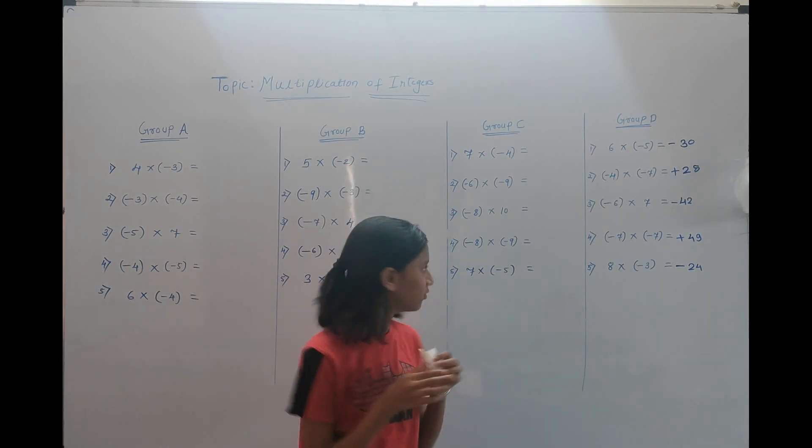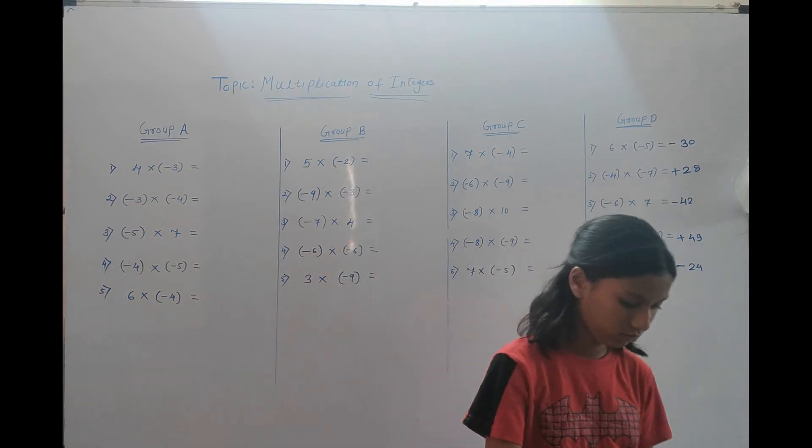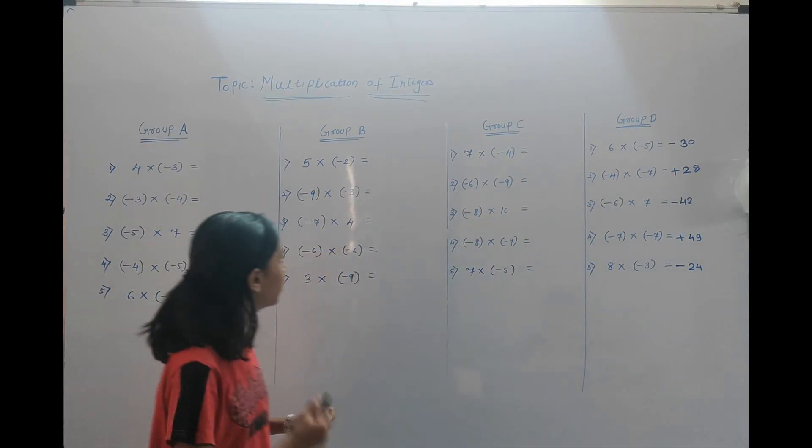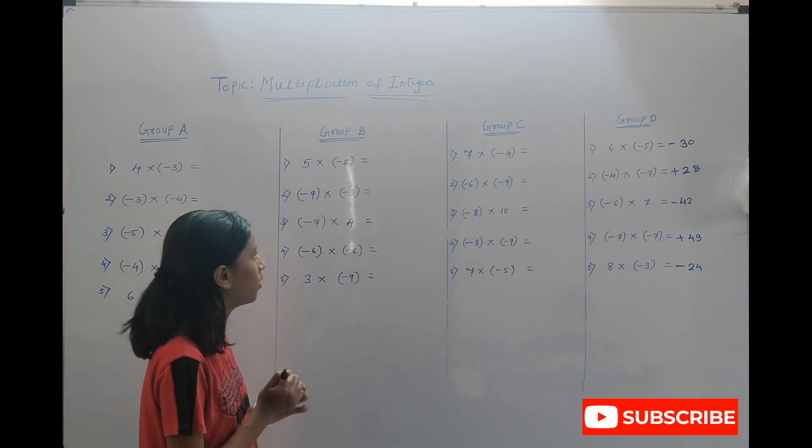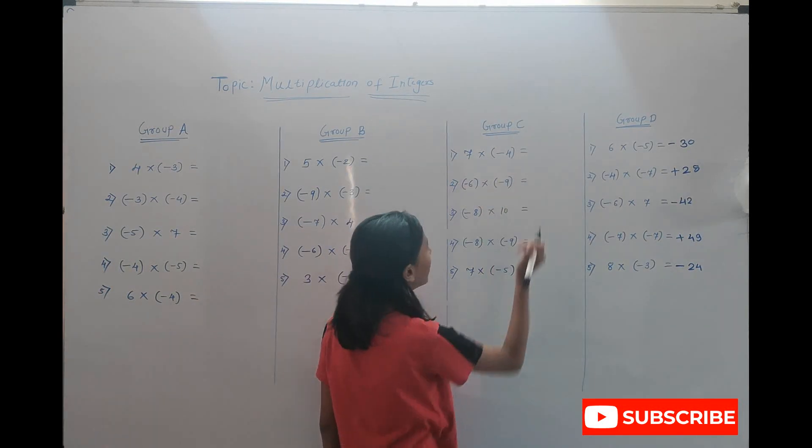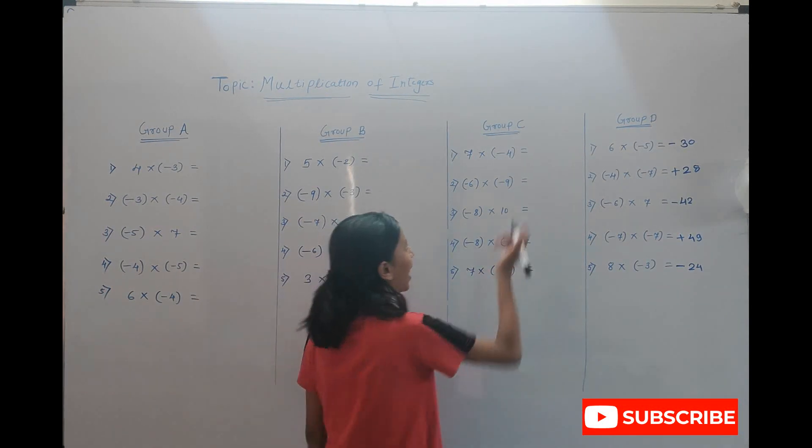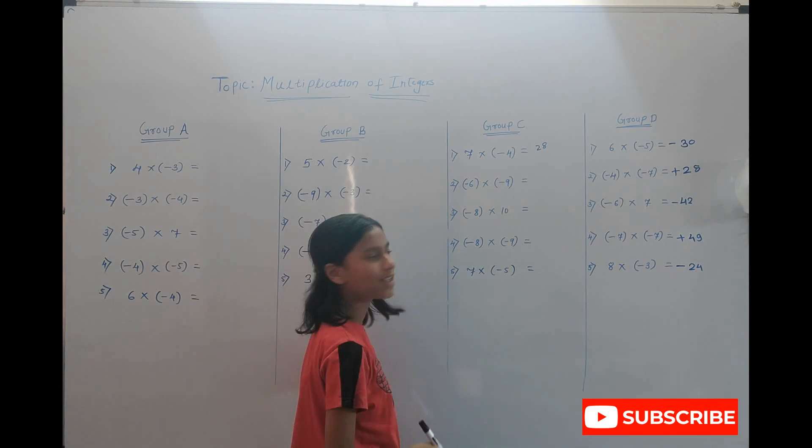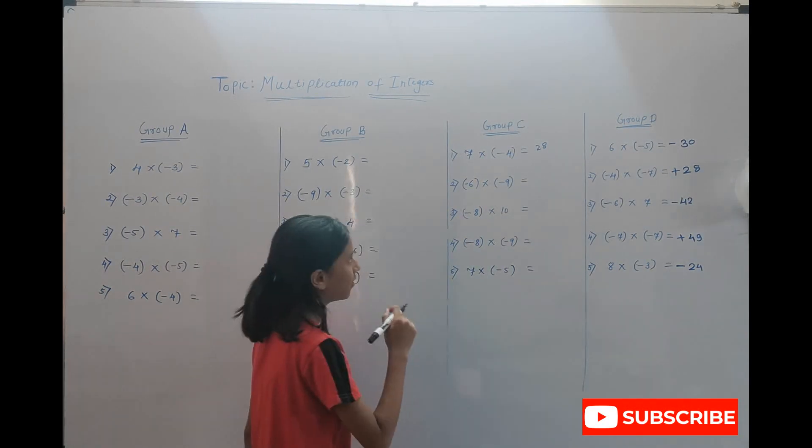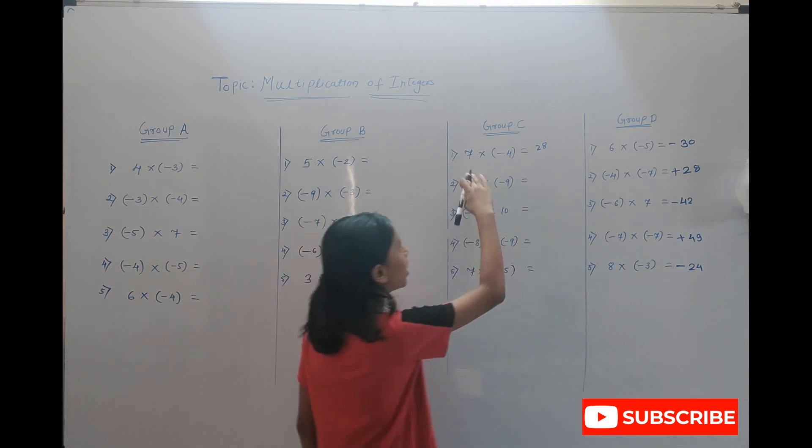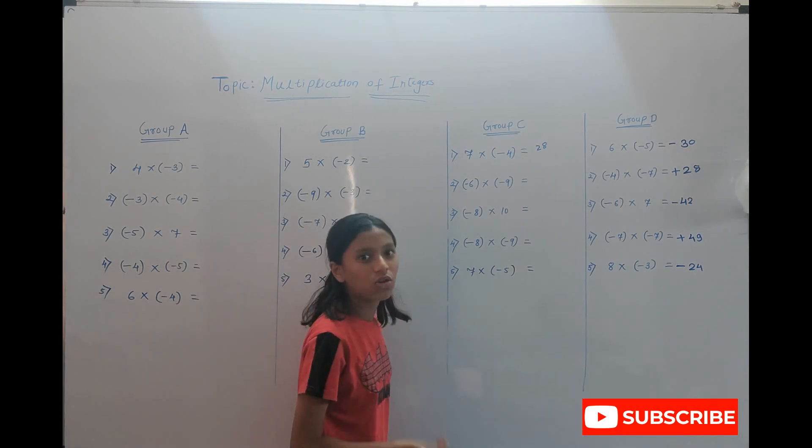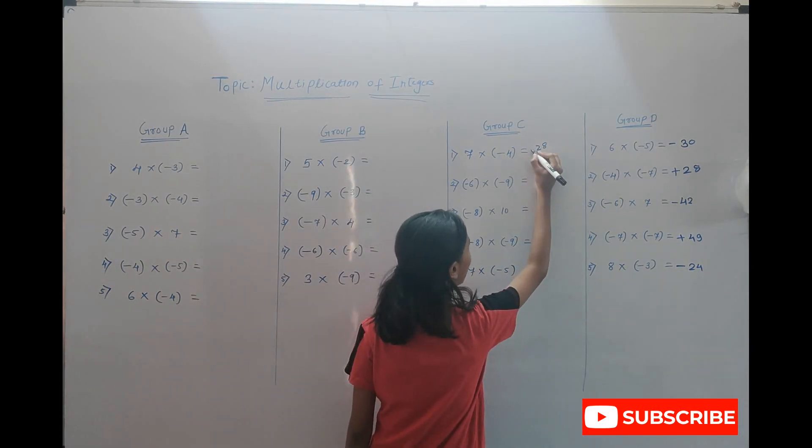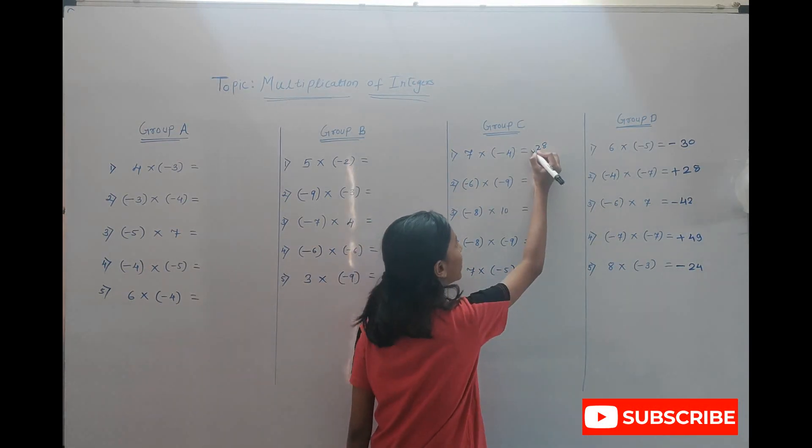There is three plus seven multiplied by minus four. The answer is twenty-eight and we have to add the sign. The two signs are different, so we have to give the negative sign.